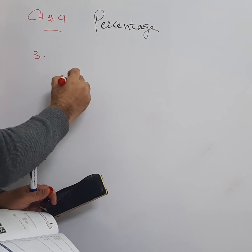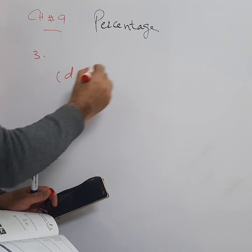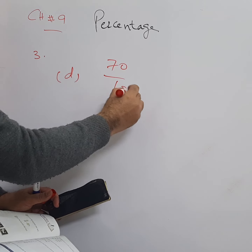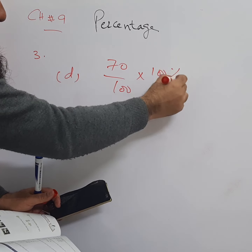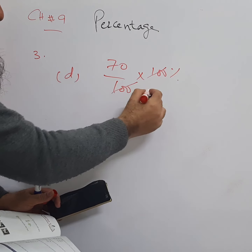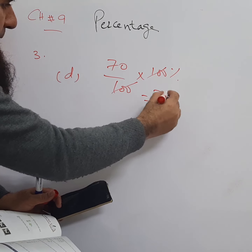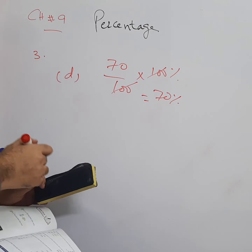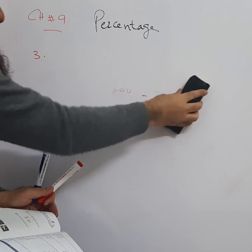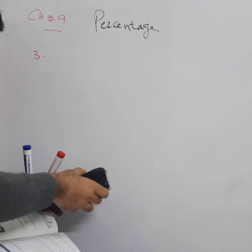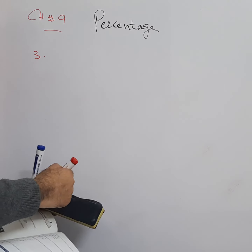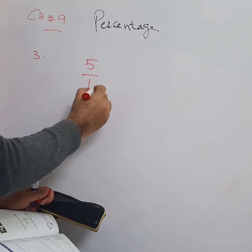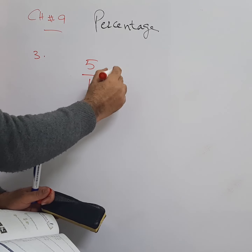Part d is 70 over 100. Multiply by 100 percent — the 100s cancel — so 70 percent is the answer for part d. We also have part e: 5 over 10. To convert it into a percentage, multiply by 100 percent.